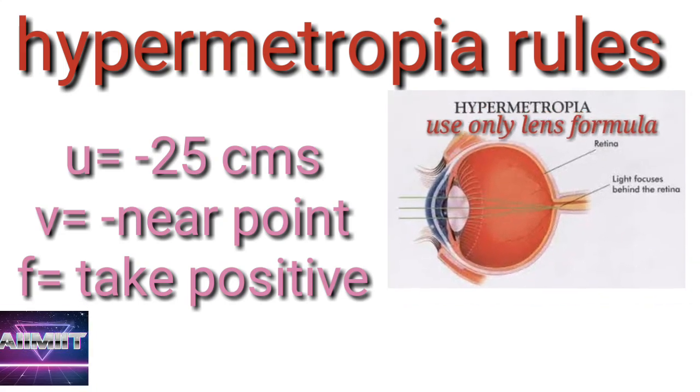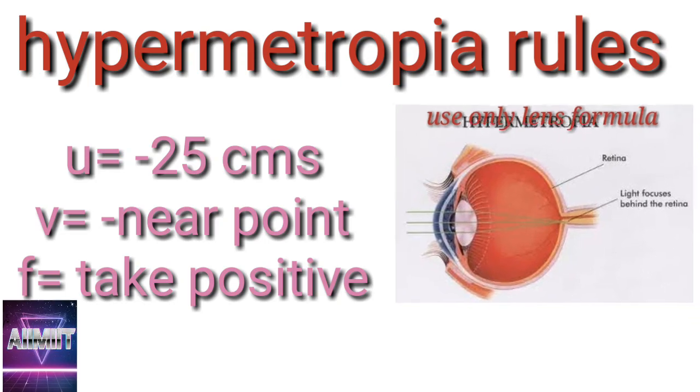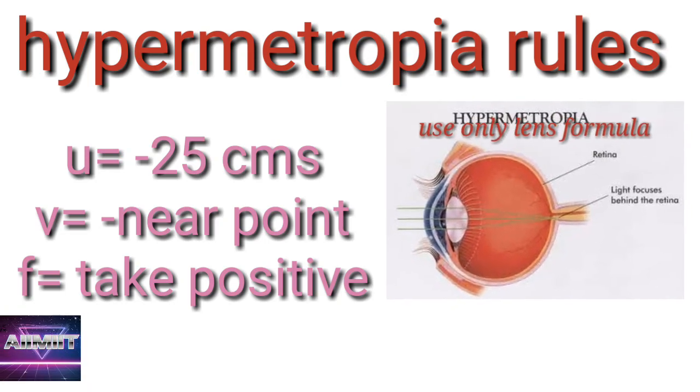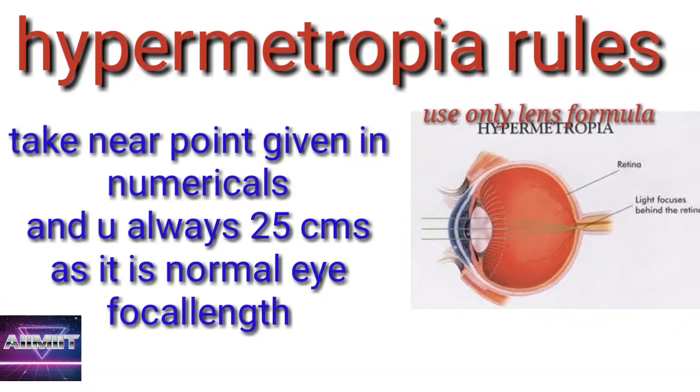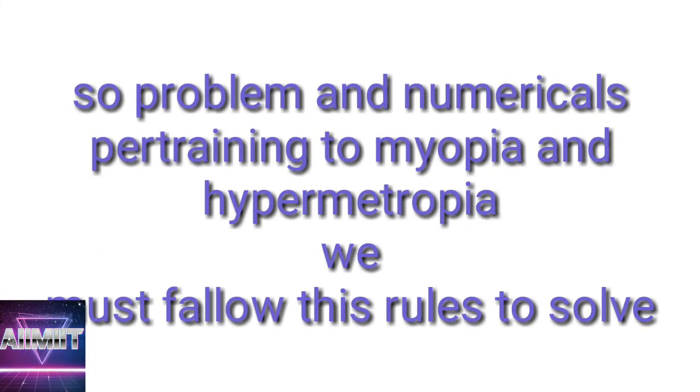Coming to the hypermetropia rules, take U minus 25 centimeters because 25 centimeters is the least distance of distinguishing, I mean to say, near point of a normal eye. And V is equal to minus near point which they will give in numericals only. And focal length, you take positive. Don't keep any sign for the value you are finding.